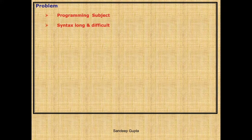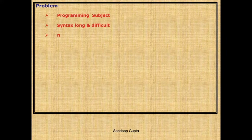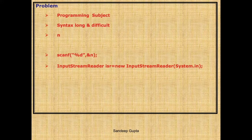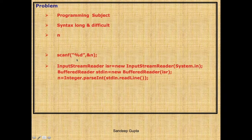There is one more problem with Java - its syntax is very long and very difficult. To understand this, let's take an example. Say there is a variable n and you want to read its value. In C language you would write scanf, which is a standard statement for reading values. But if you want to do the same thing in Java, you will write three such huge statements instead of one small C statement.